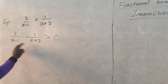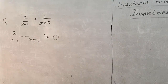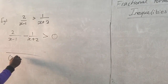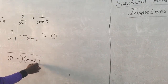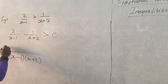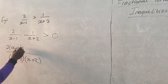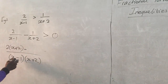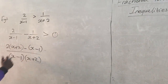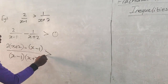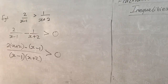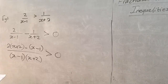With everything on the left-hand side, we can now do our normal fraction work — finding the LCM and multiplying through. The LCM is (x minus 1)(x plus 2). The first term goes in as 2(x plus 2), and the second term goes in as minus 1 times (x minus 1) — don't forget the bracket goes on the negative sign — all greater than zero.